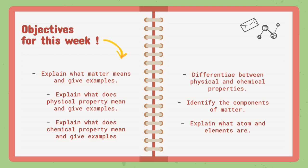As for this week's objectives, we will explain what matter means and give examples. We will know the term of matter and examples of matter. Then we will learn two terms: physical property and chemical property. We will know what each one means and give examples for both.